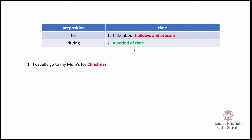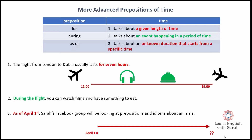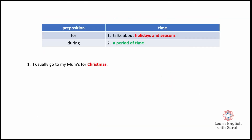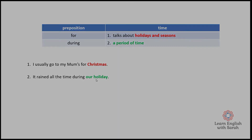So here's an example with holidays and seasons: I usually go to my mum's for Christmas — you could also say 'at Christmas', but this is fine too. And here's an example of a period of time: it rained all the time during our holiday. The difference is that 'during our holiday' has a very clear starting and ending, whereas 'for Christmas' is quite unspecific — I could have been on holiday for a week, a month, or two months — and we don't really know, and it kind of doesn't matter.